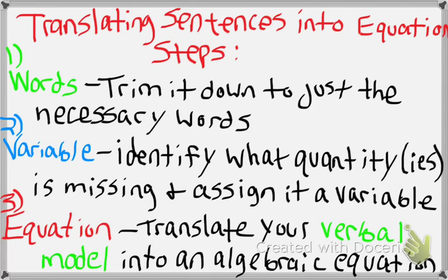Once you've done that, your second step is to identify your variable — find what quantity or quantities is missing. Usually there will be one quantity that's missing, but sometimes there might be two. Identify what's missing and assign it a letter, a variable, to hold its spot when you start describing the situation. Your third and final step is to write the equation — translate your verbal model, your words, into an algebraic equation, using your variable to represent your unknown quantity and how it relates to everything else.